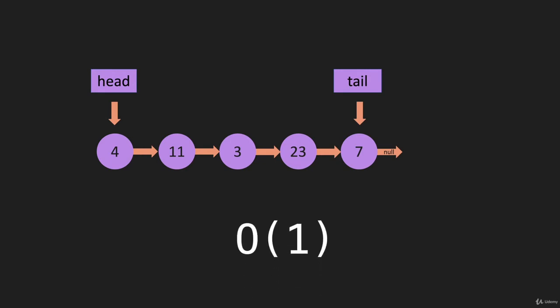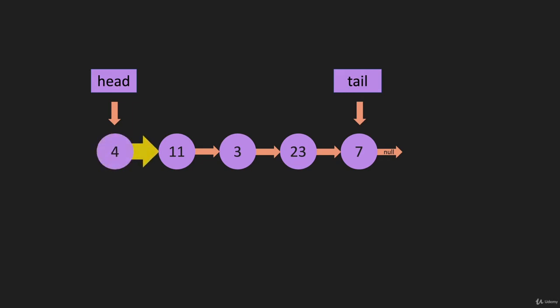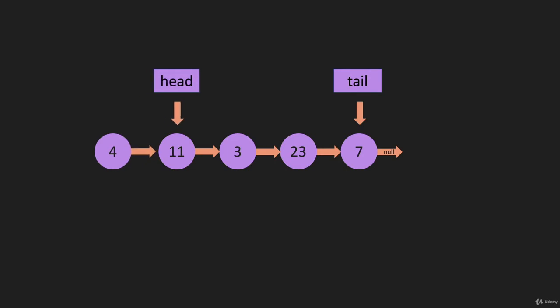How about if we take it off? We need to set head equal to the 11 node, and we do have an item pointing at the 11, which is the four node. We set head equal to head dot next — that moves head over — and then we can just remove the four. So removing from the beginning is also O(1).